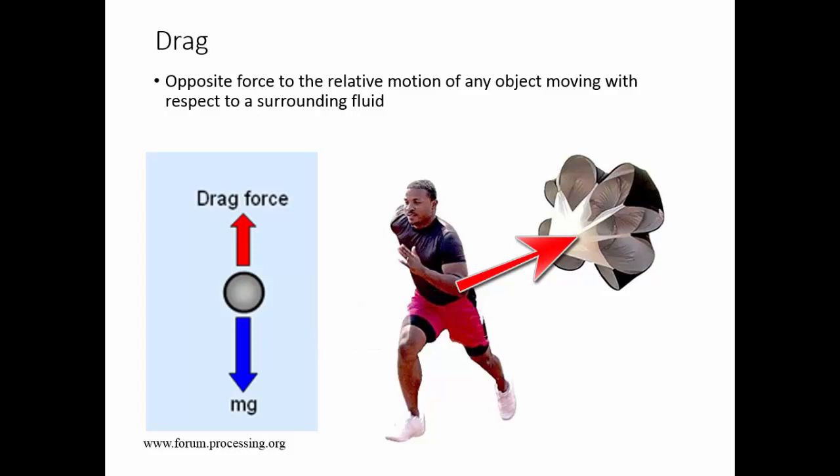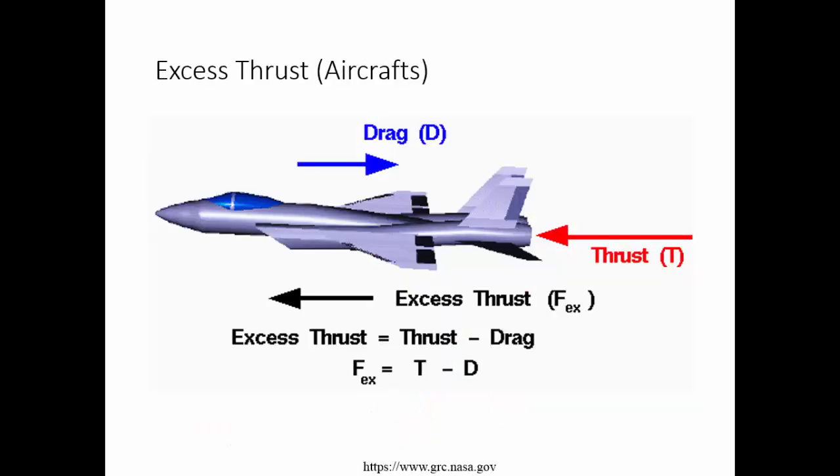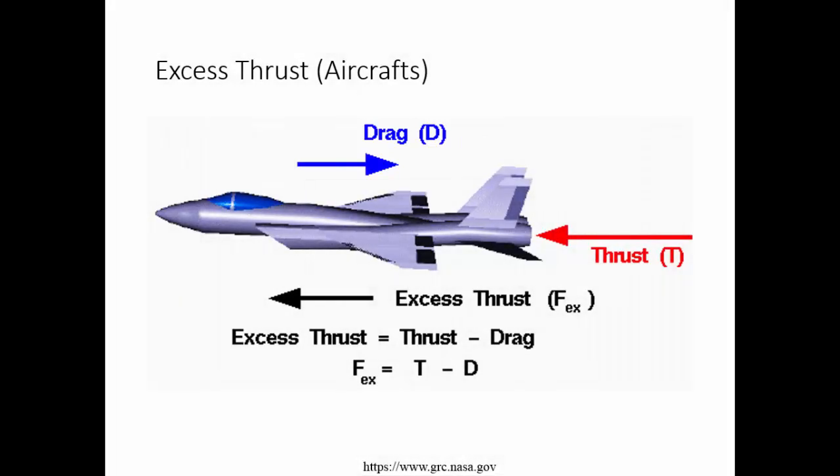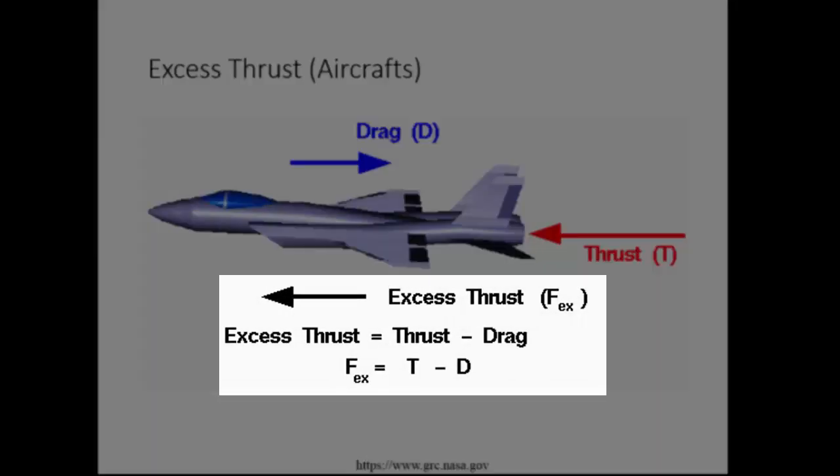In this aircraft, the drag force is opposite to the direction of the motion of the aircraft. The key point one should take away from these examples: a considerable amount of thrust we supply to propel the aircraft is spent to overcome the drag resistance. The rest, which is the excess thrust, is used for the propulsion.